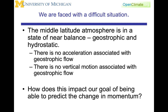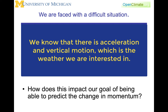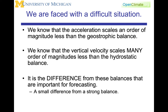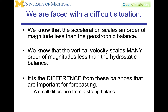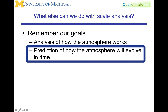This points up the difficult situation we're in: the mid-latitude atmosphere is in a near state of balance — nearly geostrophic, nearly hydrostatic, with no acceleration and very little vertical motion. It's hard to think about how we calculate acceleration or vertical motion, yet we know both are important to weather and forecasting. Acceleration scales an order of magnitude less than the geostrophic balance, and vertical velocity is many orders of magnitude smaller than horizontal velocity, crushed by the hydrostatic balance. But it is precisely these differences from balance that matter to us.